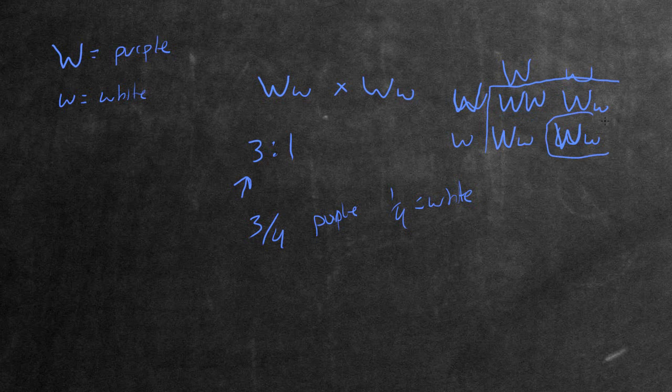We know that this situation right here, the little w, little w, is going to give you white flowers. So this one right there is white flowers, while these three up here are versions of purple flowers. Notice that they all have one, at least one, capital W. This one here has two, this one has one, and this one has one.